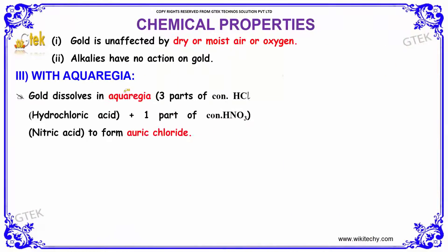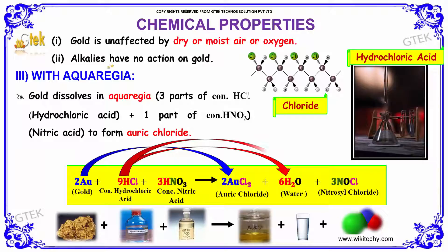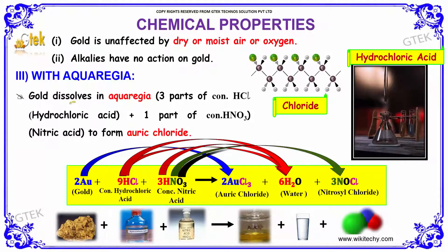If we talk about the chemical properties: gold is unaffected by dry or moist air or oxygen. Alkalis have no action on gold. With aqua regia — three parts of HCl and one part of concentrated nitric acid — gold dissolves to form auric chloride.